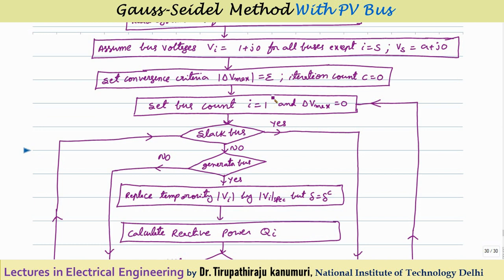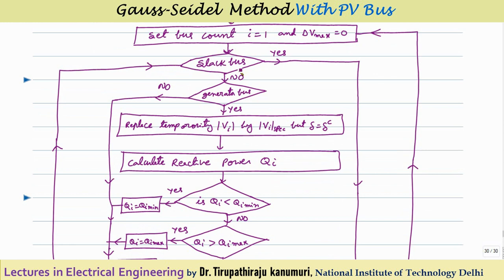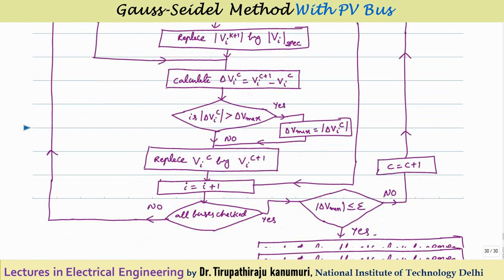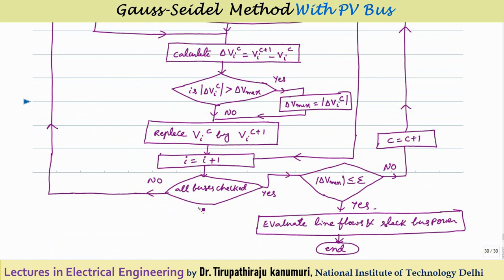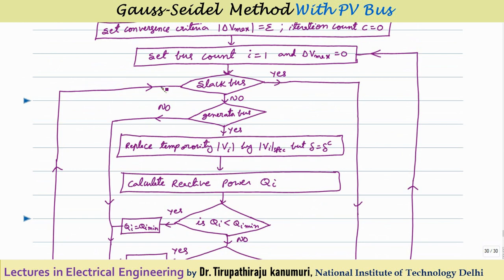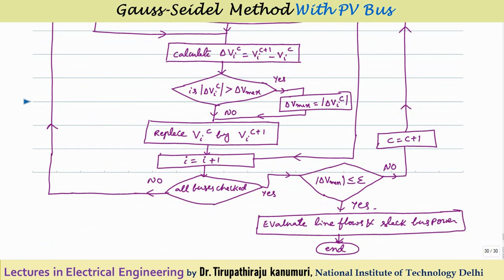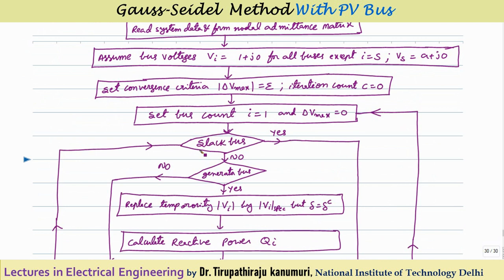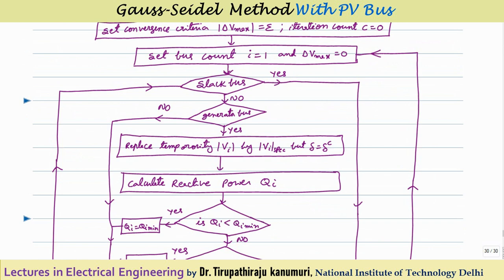In the first iteration, start from bus 1. Check whether each bus is the slack bus - if yes, skip it (no calculation needed) and increment the bus counter. Continue to bus 2. Since bus 2 is not the slack bus, check whether it is a generator bus. If it is not a generator bus, treat it as a load bus and calculate Vi(C+1) using the actual Vi(C).